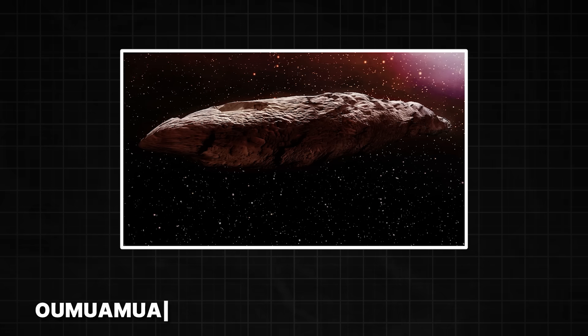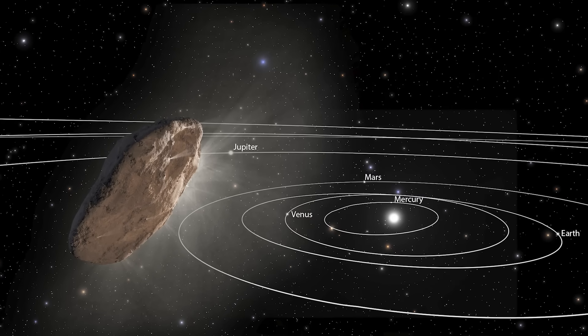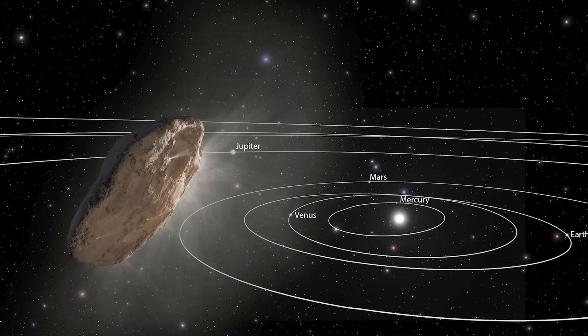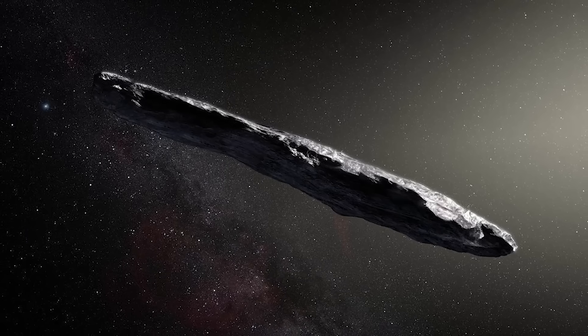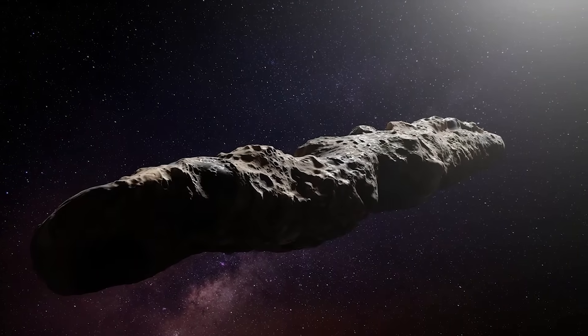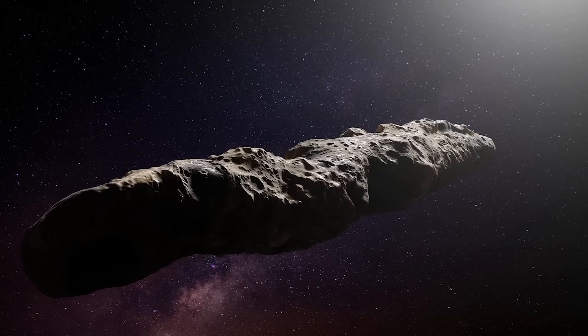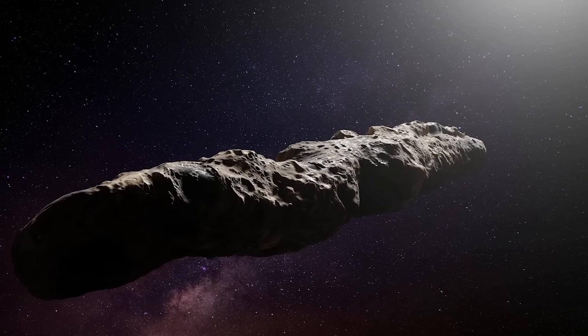Oumuamua. That name is Hawaiian for scout, and it could not have been more appropriate. When Oumuamua was discovered, it instantly baffled scientists. It was shaped like a cigar, hundreds of feet long but incredibly thin. Nothing like it had ever been seen. It was dark, reddish, and tumbling end over end.